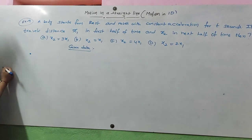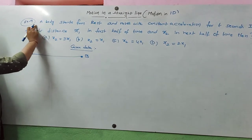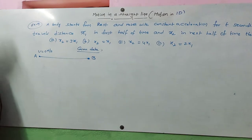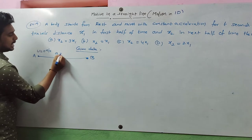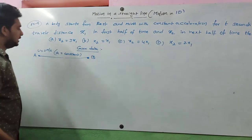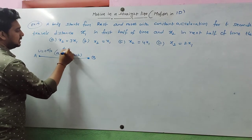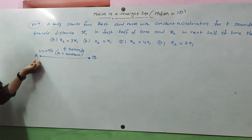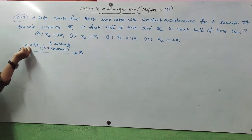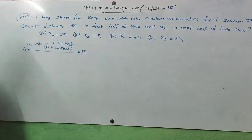Let us represent the given data in diagrammatic format. Consider starting point A and ending point B. A body starts from rest, so initial velocity is zero meters per second. Acceleration is constant throughout the motion, and the total time taken from A to B is t seconds.